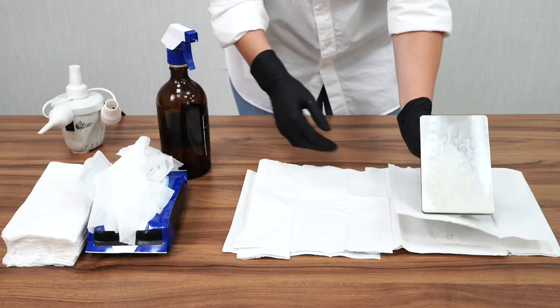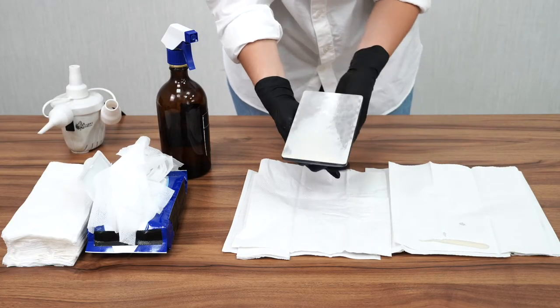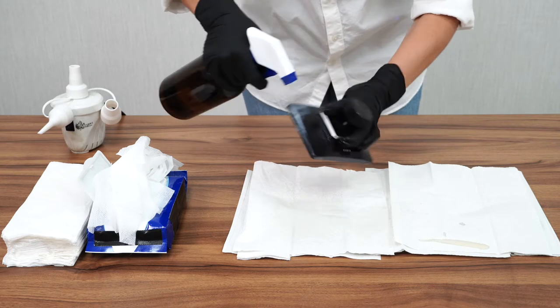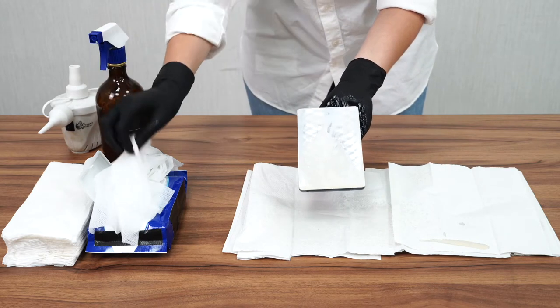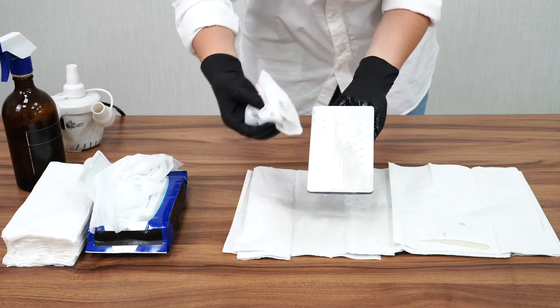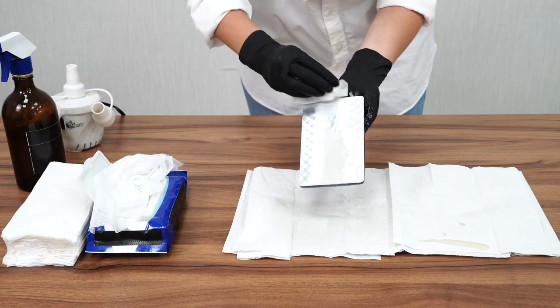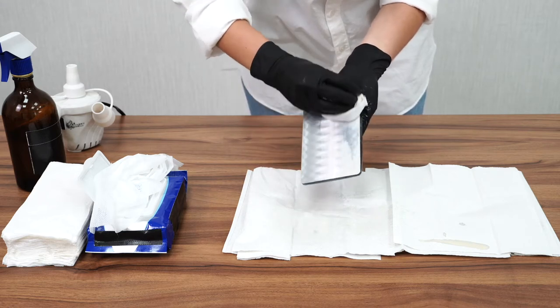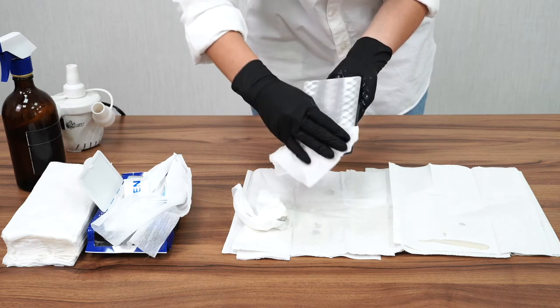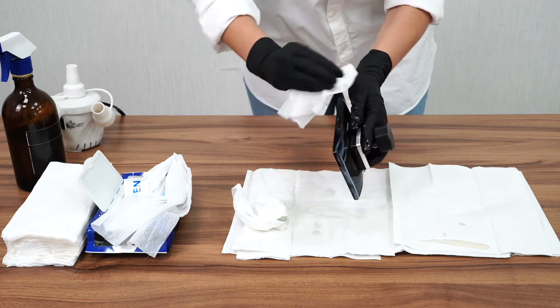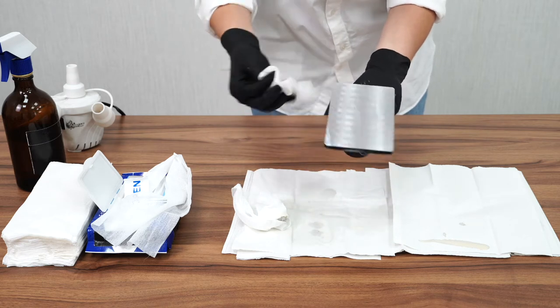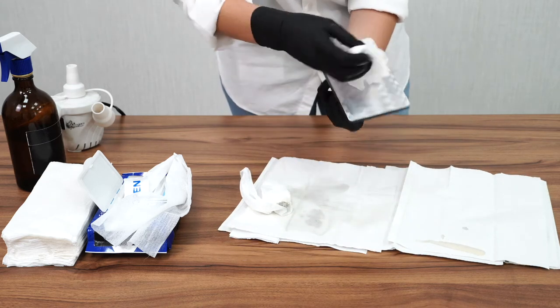So your first step is going to be cleaning your build platform here. To do that, you're going to take some alcohol and you're going to spray it generously all around here. And you're going to grab a wipe and gently go over the aluminum part of your build platform. Then I also need to make sure that all the surrounding area here is nicely cleaned.